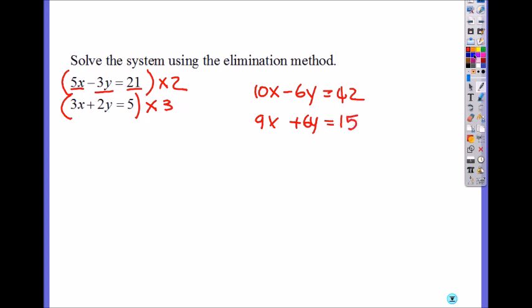Again, the reason why I multiply by 2 and 3 here was to make 6y for both equations. Now how can you eliminate negative 6y and 6y? Do you need to add it or subtract? Just add it right. Why? Negative 6y plus 6y becomes 0. Eliminate.